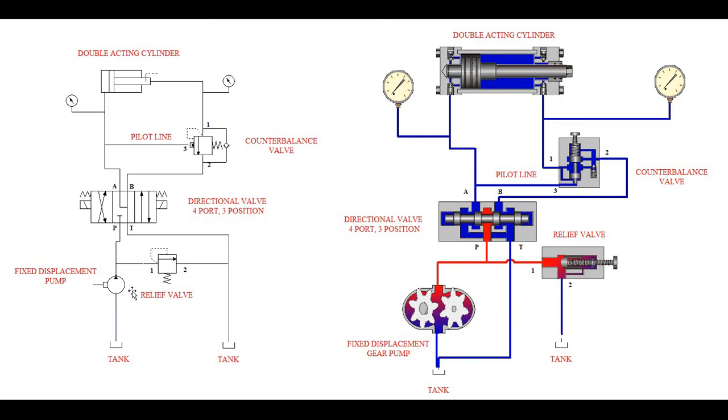So to start off, schematically, the first component in our circuit is a fixed displacement pump. This schematic symbol does not specify what kind of fixed displacement pump. It could be a piston pump, it could be a gear pump, it could be a vane pump, but if we look at the corresponding animated symbol, it's obviously a gear pump because we can see the two gears meshing.